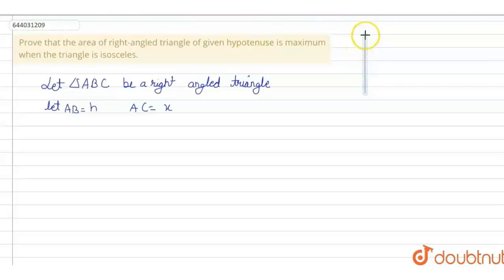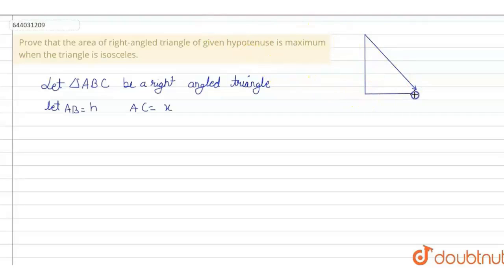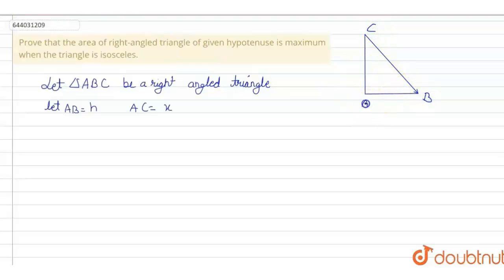So we label the vertices: C at the right angle, B and A at the other vertices. The third side BC becomes under root of H squared minus X squared, as we have this side as H and this side as X.